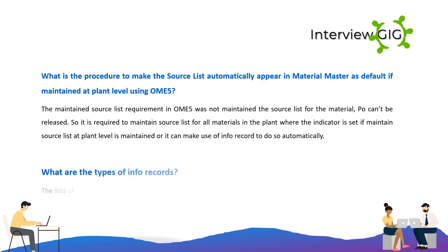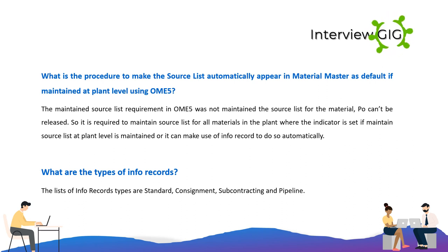What are the types of info records? The types of info records are: standard, consignment, subcontracting, and pipeline.